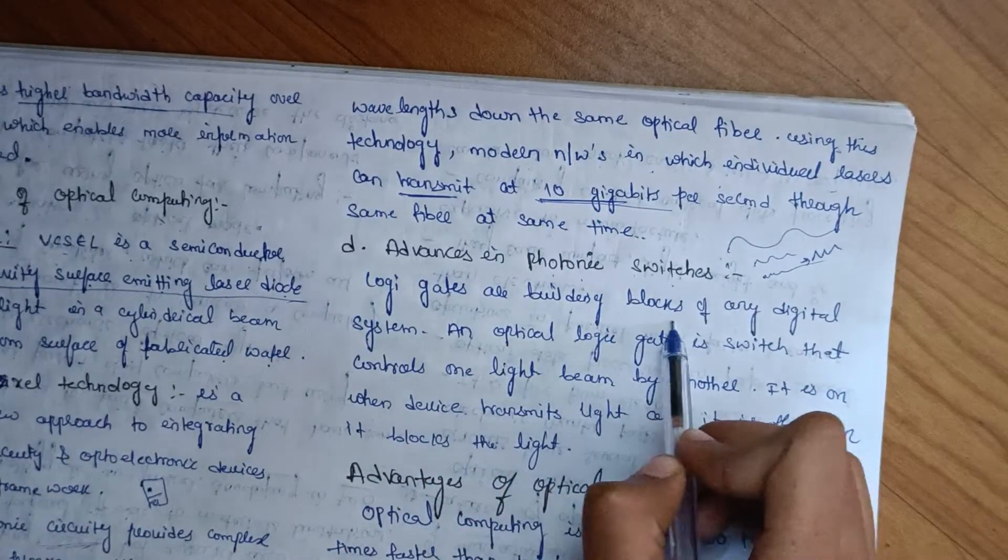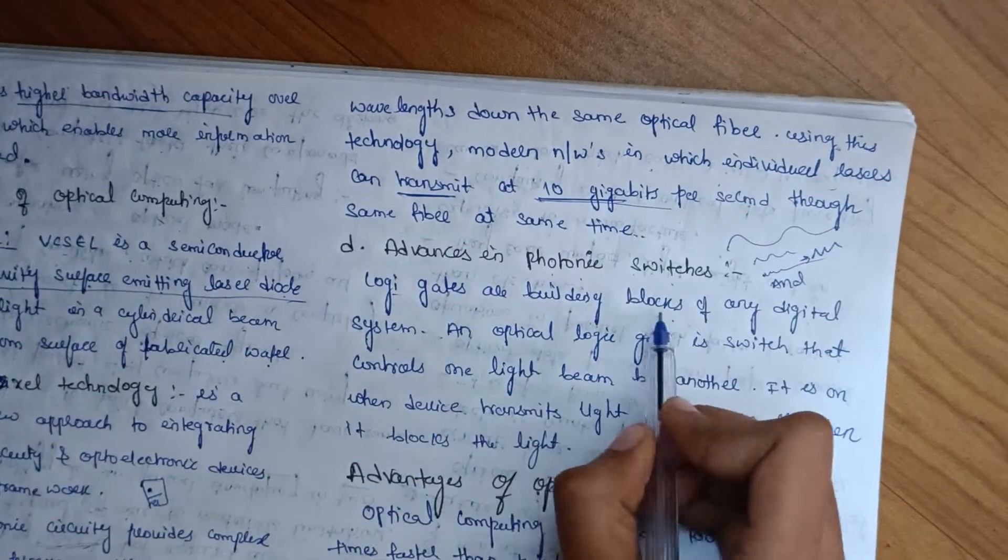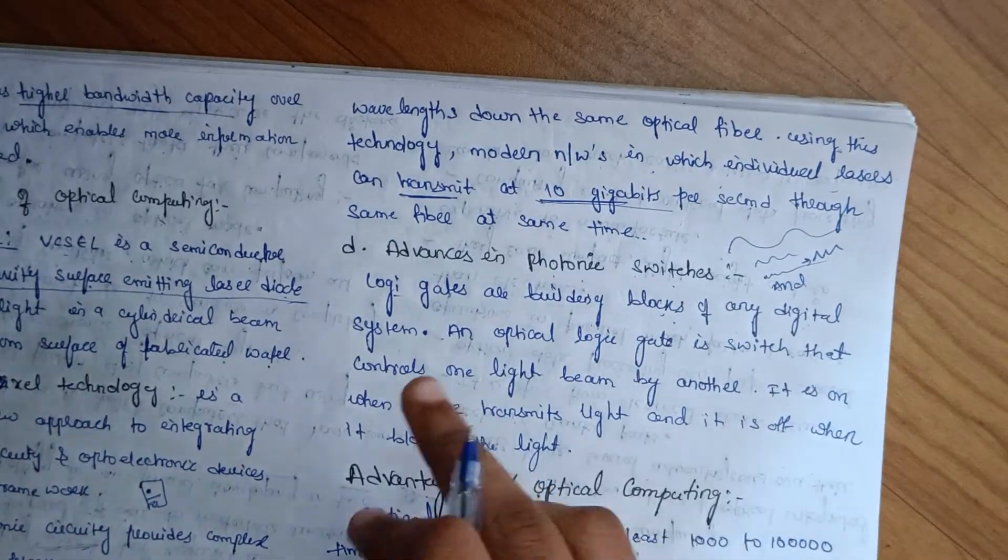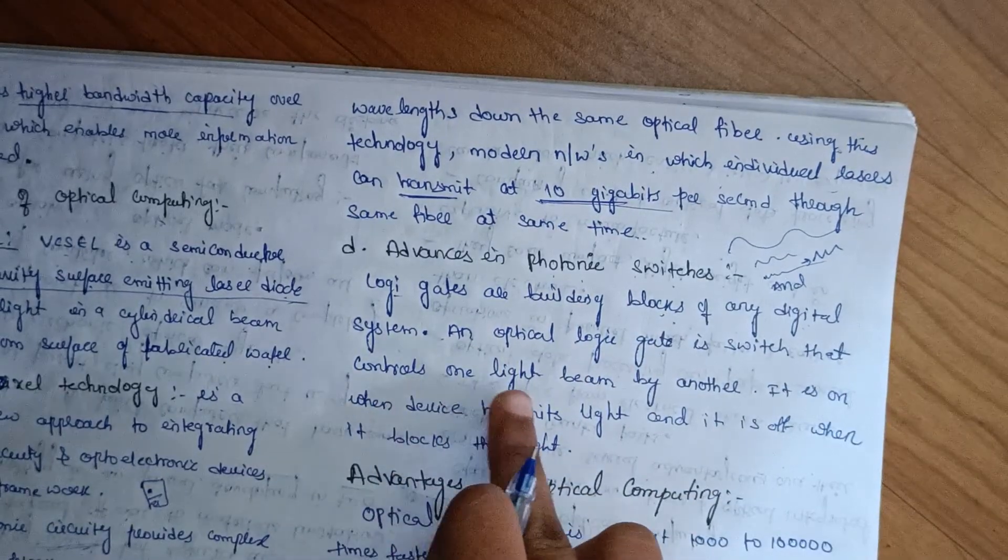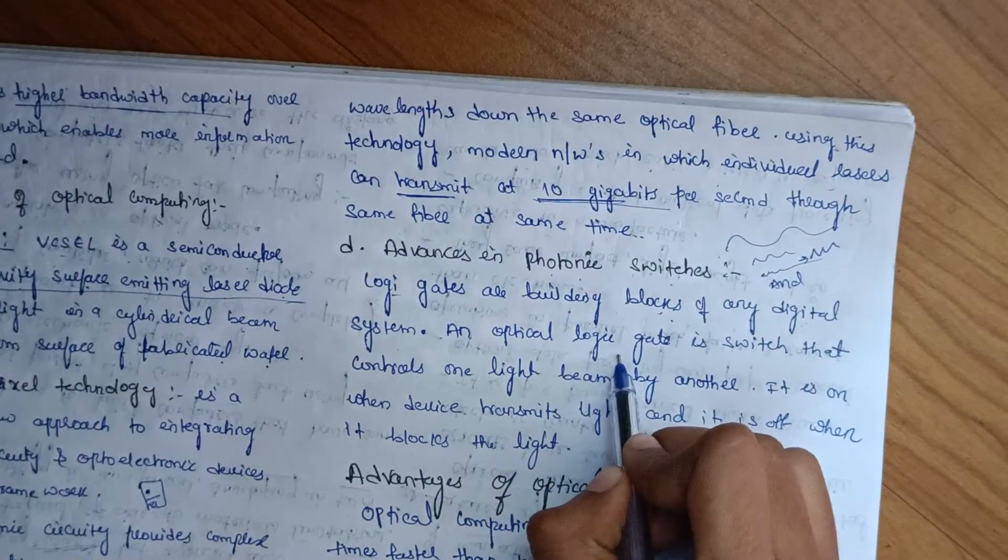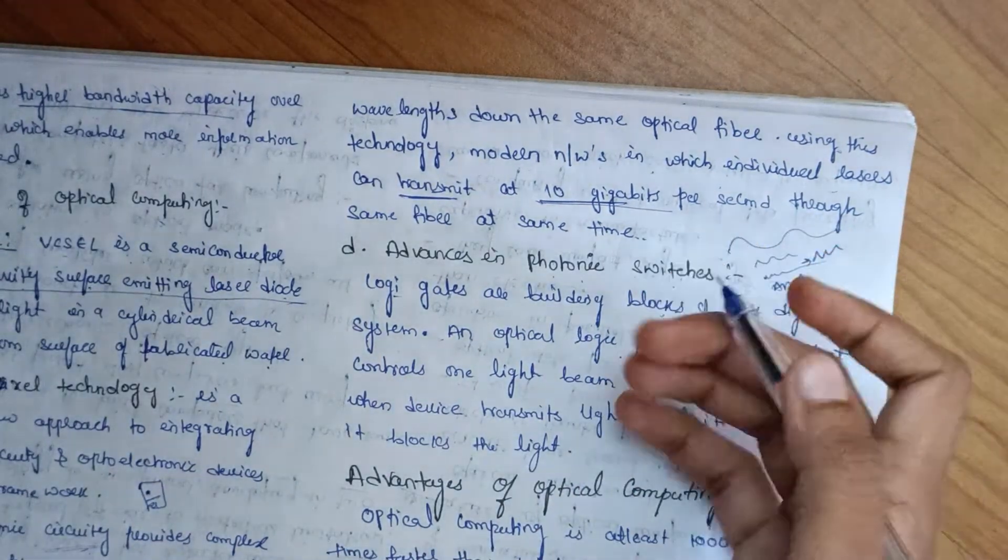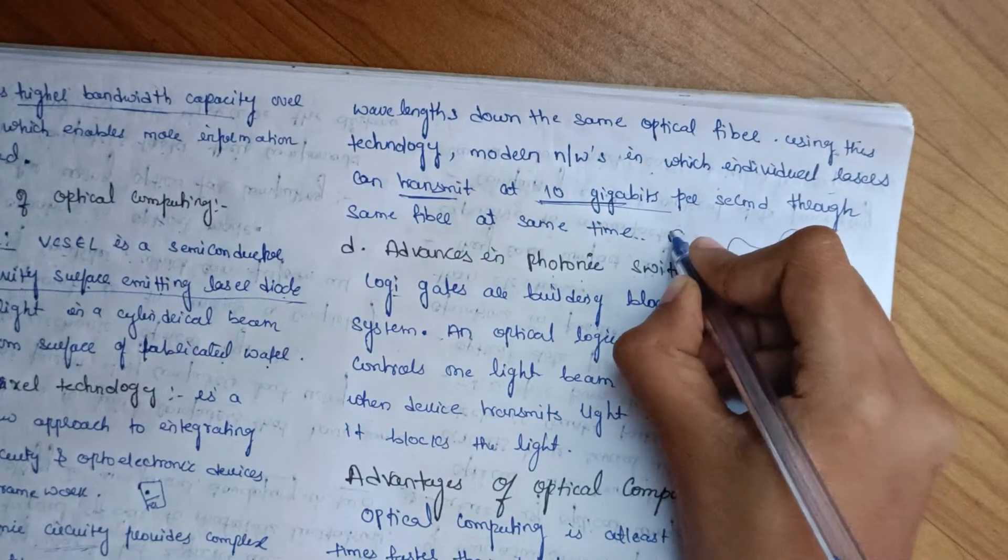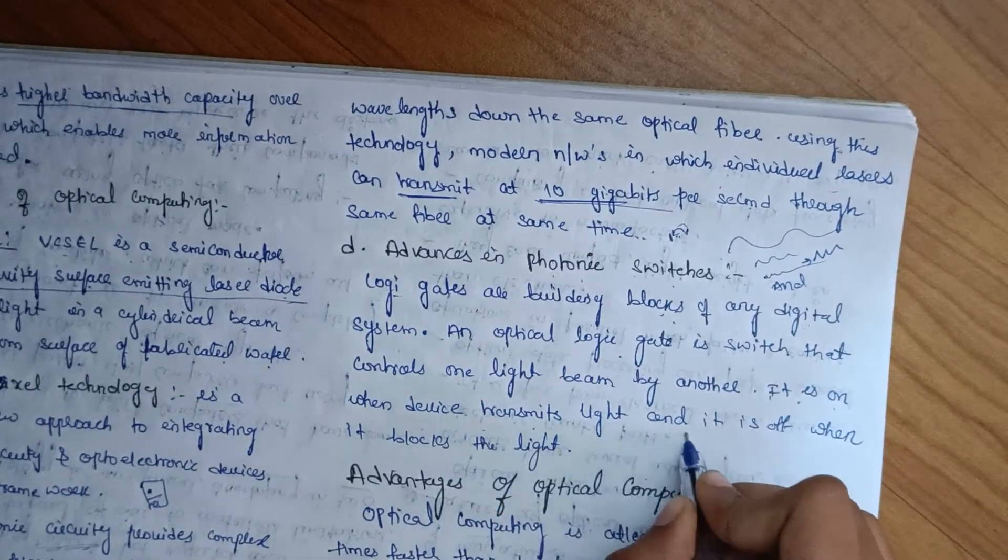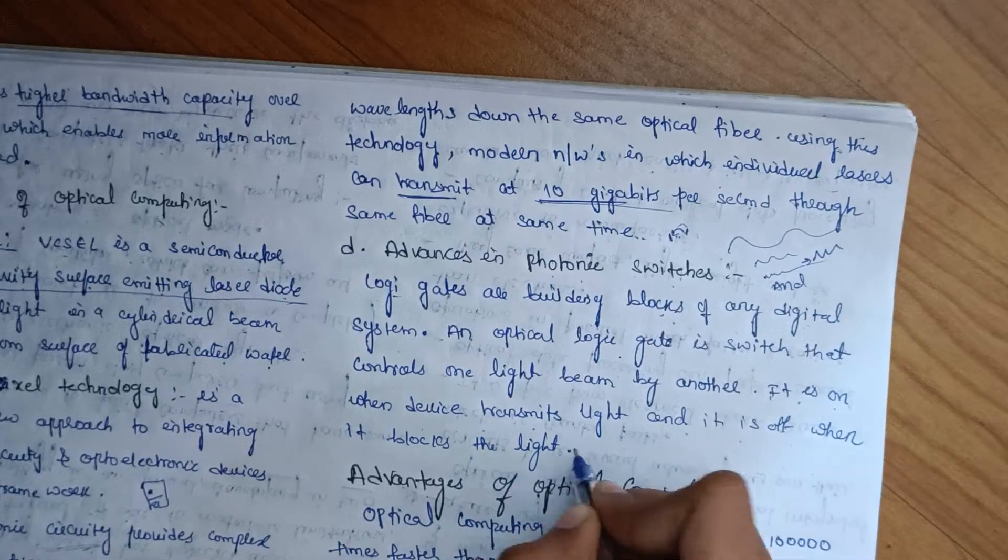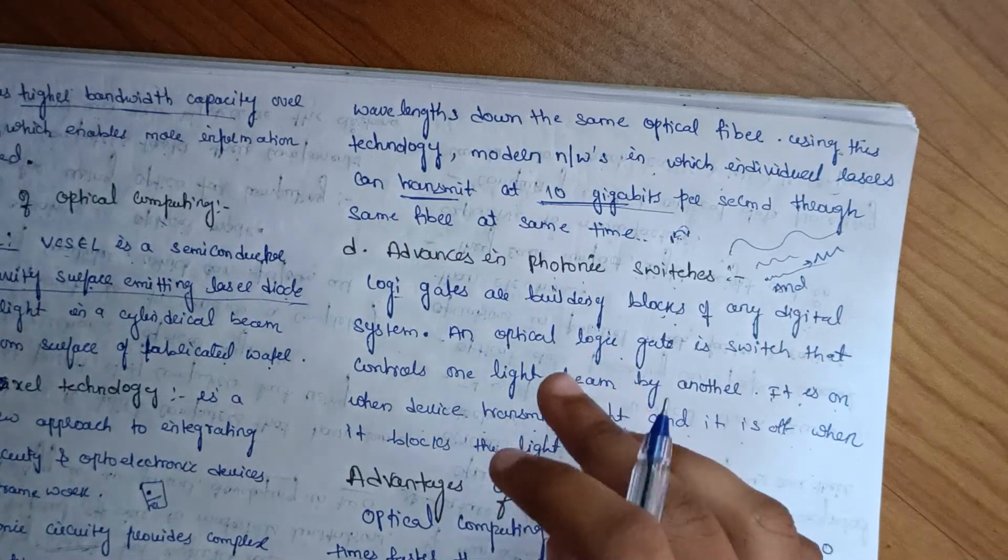Logic gates are building blocks of any digital system. Optical logic gates control one light beam by another. It is on when device transmits light and it is off when it blocks the light. These are the components of optical computing.